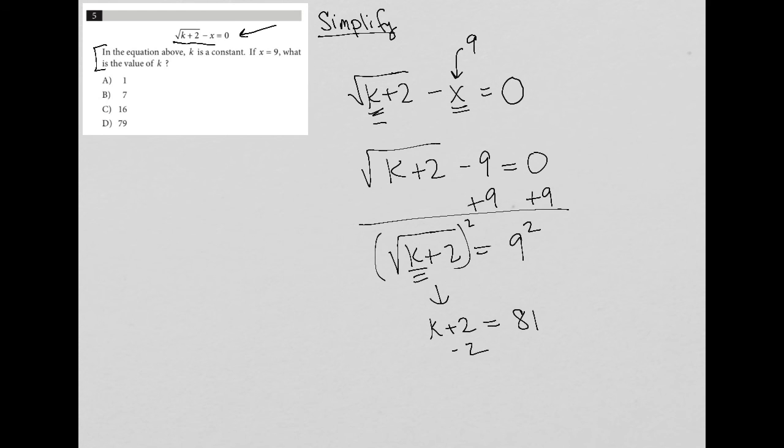And then I subtract 2 from both sides so that I can isolate k. And I'm left with k equals 81 minus 2, which is 79. And therefore the correct answer is choice D.